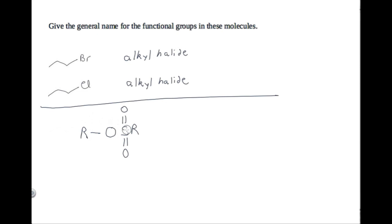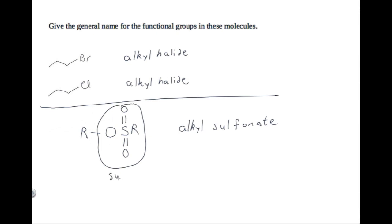Now let's consider this general structure. This is referred to as an alkyl sulfonate. This part is the sulfonate group, and this part is the alkyl group. In this structure, both of the R's stand for two different carbon chains. This particular carbon chain is where the 'alkyl' in the term comes from.